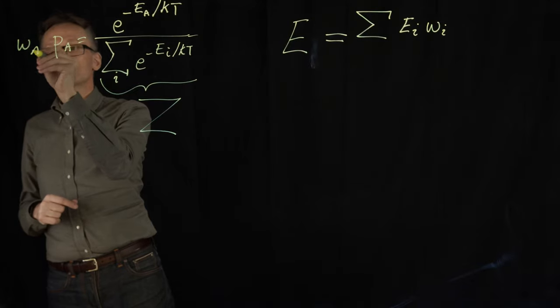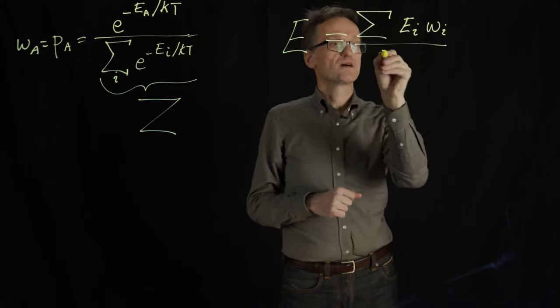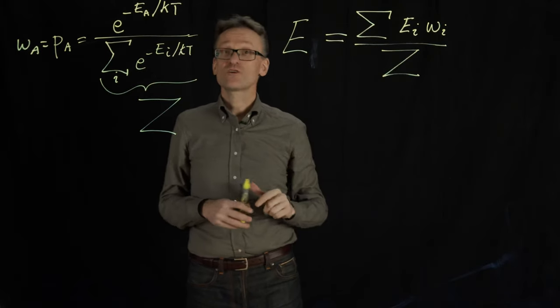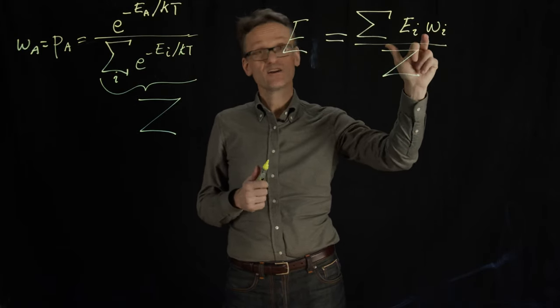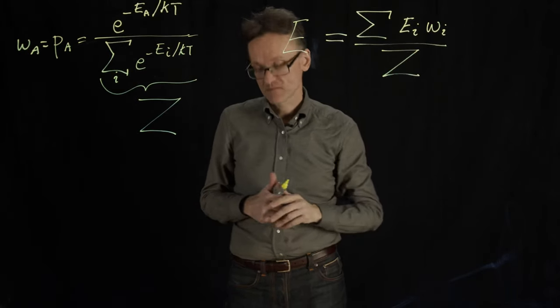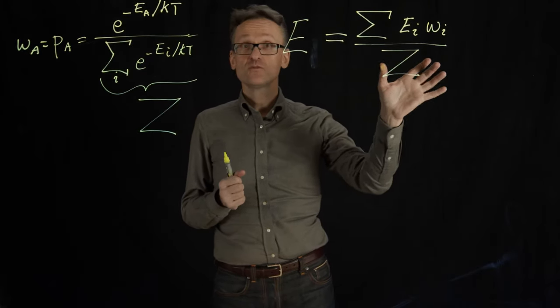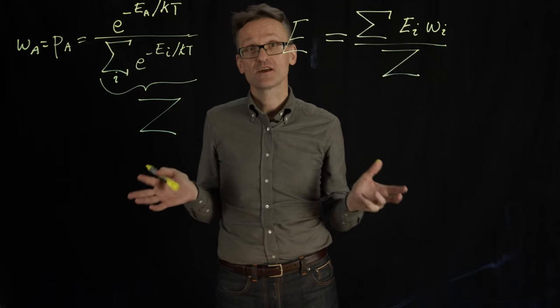I can call this the weight of state i divided by the partition function to normalize it. This goes for any property that I can calculate in each state. In state i, I know what the energy of state i is, right? So if you want to average anything—say over molecules or something—as long as you can enumerate this over states, you're done. Statistical mechanics will tell you everything.